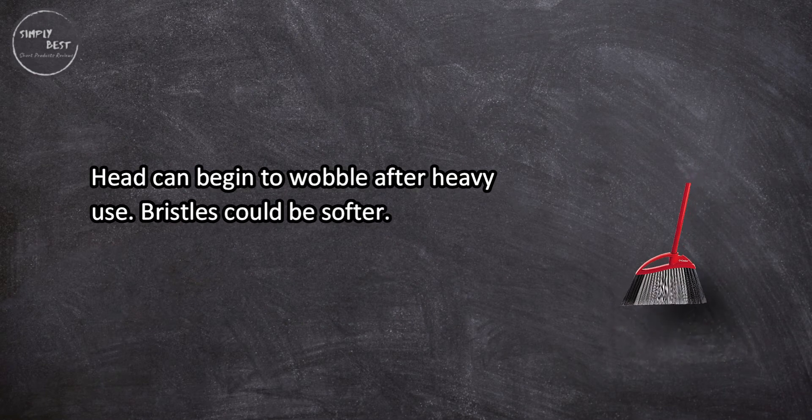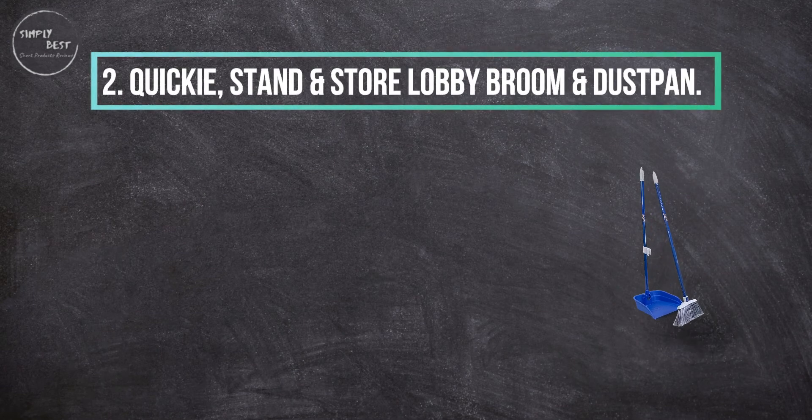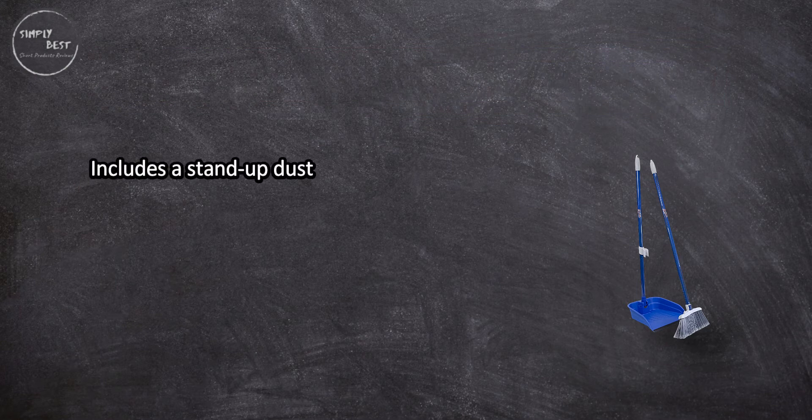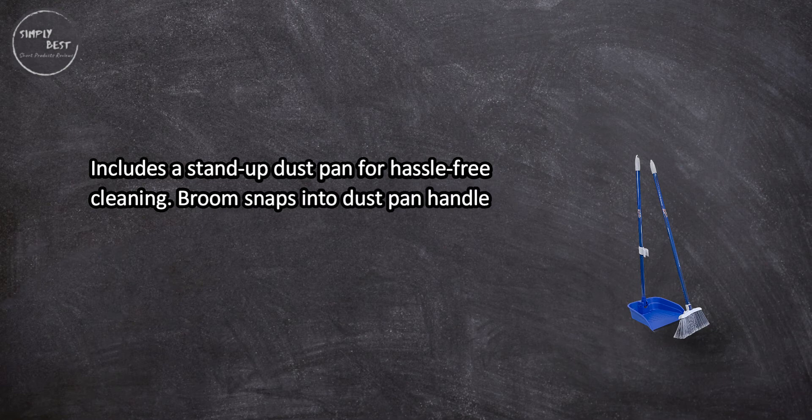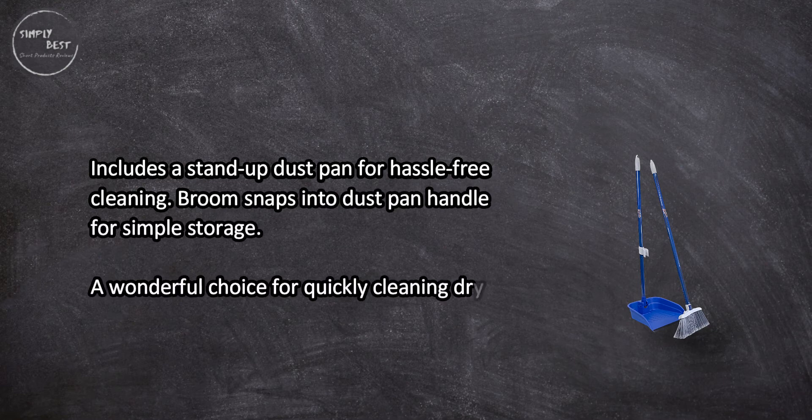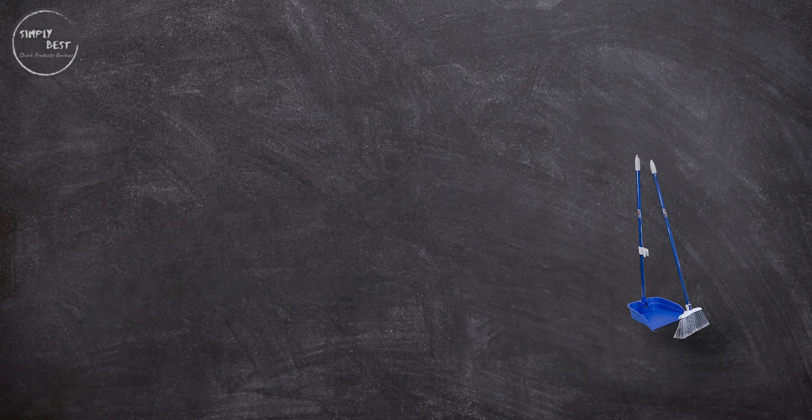At number two, Quickie Stand and Store Lobby Broom and Dustpan. Includes a stand-up dustpan for hassle-free cleaning. Broom snaps into dustpan handle for simple storage. A wonderful choice for quickly cleaning dry spills.